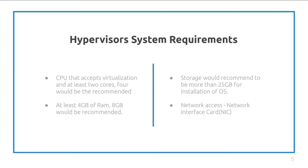Let's begin with some system requirements. To get the basic requirement, we need a CPU with at least two cores that can enable virtualization, 4 gigabytes of RAM, more than 25 gigabytes of storage space to allocate space to a virtual machine, and a network interface card to help install and update the operating system. Of course, more is better, but these are the minimum requirements.